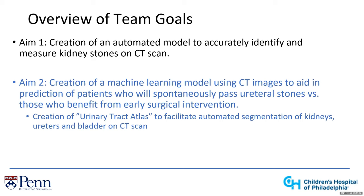Aim two is to create a machine learning model using deep learning of CT images to aid in the prediction of the likelihood of patients with ureteral stones spontaneously passing these. Our ultimate goal, like our colleague Justin Ziemba talked about yesterday, is to deliver better individualized patient care — predicting patients who need surgery earlier and those likely to spontaneously pass their stones to avoid surgery. A sub-aim is to create a urinary tract atlas.